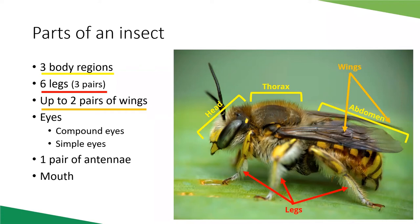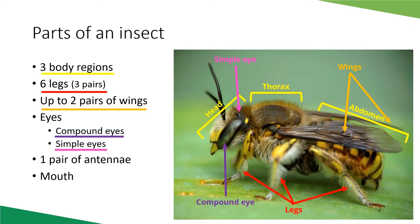Insects have up to two pairs of wings — four wings total — though some groups have only one pair, and some have lost their wings altogether as adults. Insects also have two types of eyes: two compound eyes typically on the sides of the head, and simple eyes called ocelli typically on the top of the head. The number and arrangement of ocelli can be important for identification at the family and genus level.